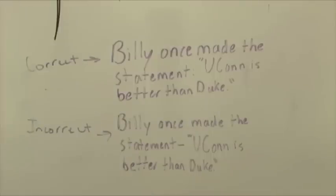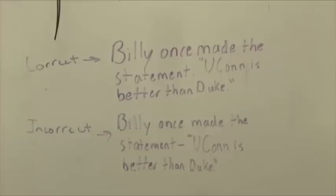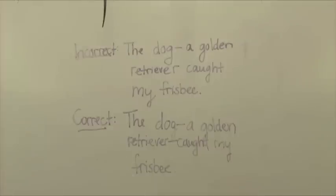Statement one in this instance is correct with a colon, because it indicates a quotation that has been formally announced. The usage of a dash in this situation is incorrect. The first example in this instance is incorrect, because the phrase 'a golden retriever' should be in between two dashes, not just one.